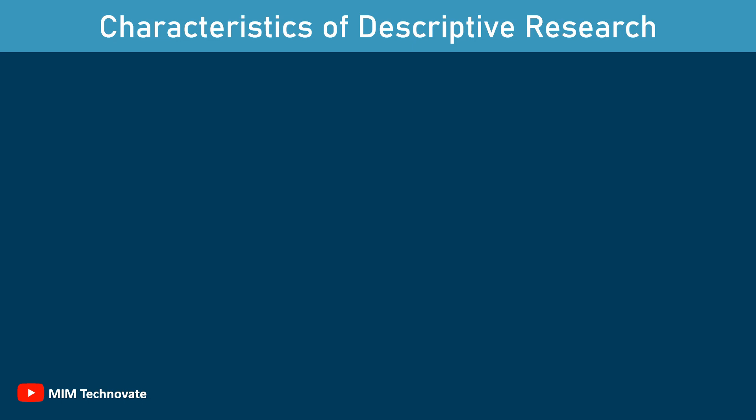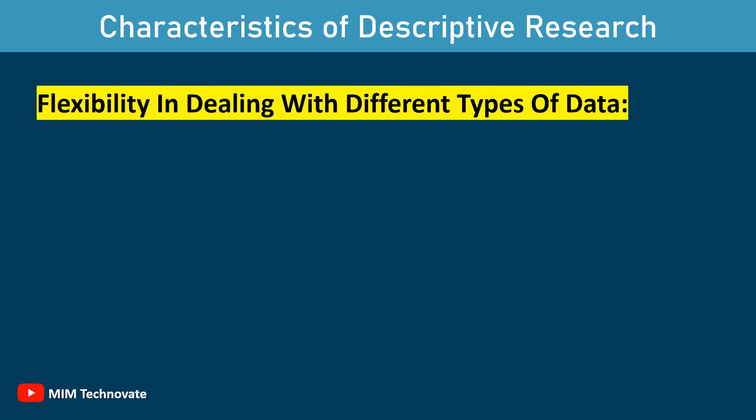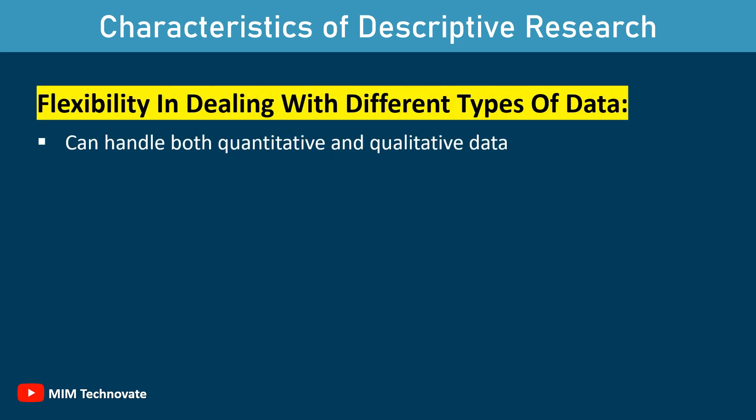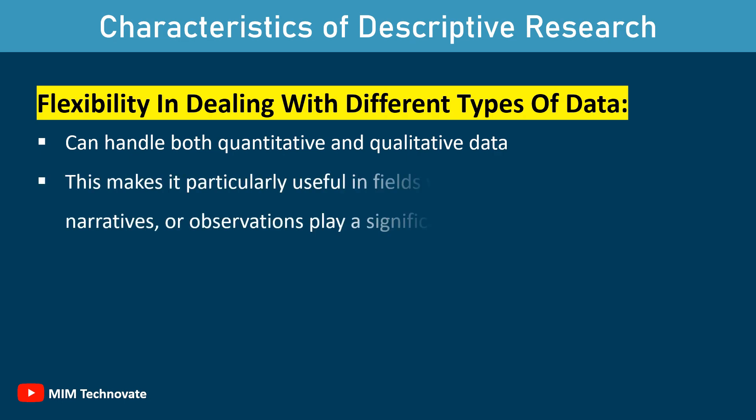Another important attribute of descriptive research is its flexibility in dealing with different types of data. Descriptive research can handle both quantitative and qualitative data. This makes it particularly useful in fields where subjective opinions, narratives, or observations play a significant role.